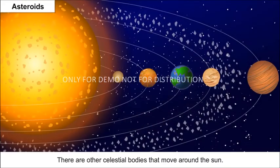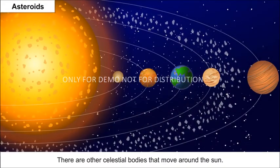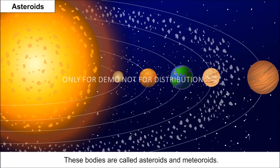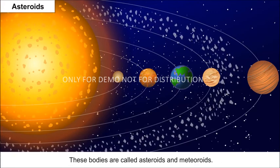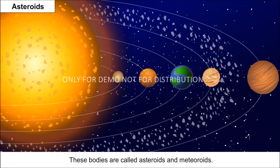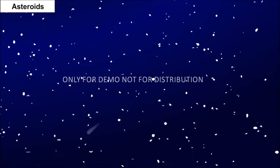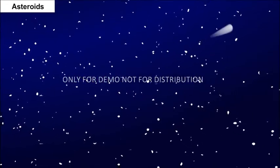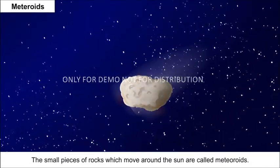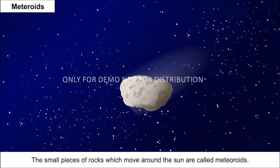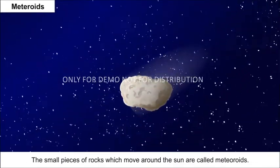There are other celestial bodies that move around the Sun. These bodies are called asteroids and meteoroids. Asteroids are found between the orbits of Mars and Jupiter. The small pieces of rock which move around the Sun are called meteoroids.